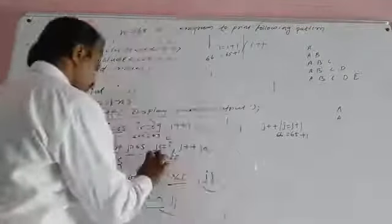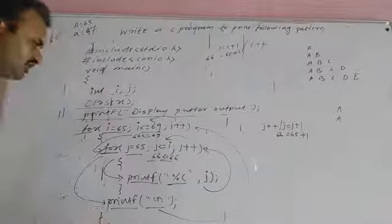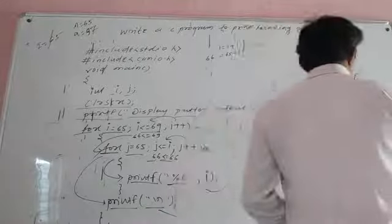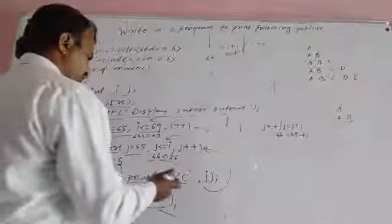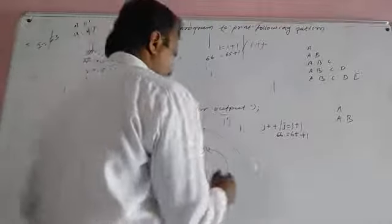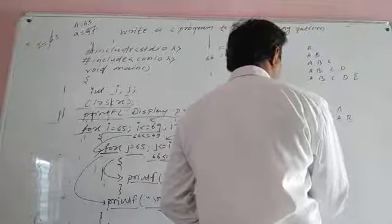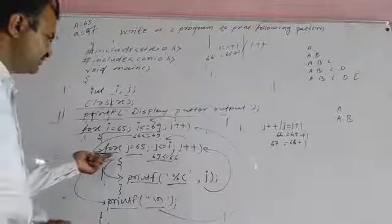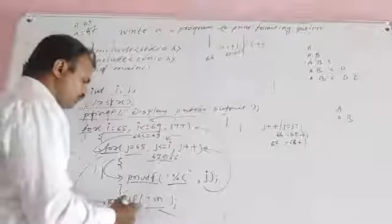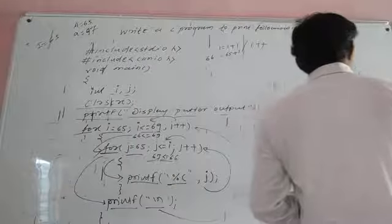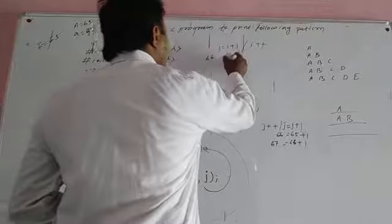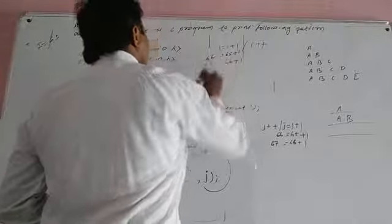J value is 66. The ASCII value 66 corresponds to character B, so the printf statement displays B. Once again j is incremented by 1, so j becomes 67. The condition 67 less than or equal to 66 is false, so the inner loop exits and a new line is generated.